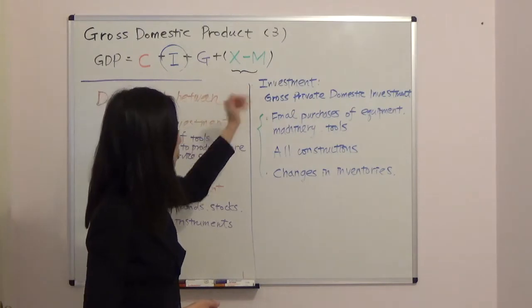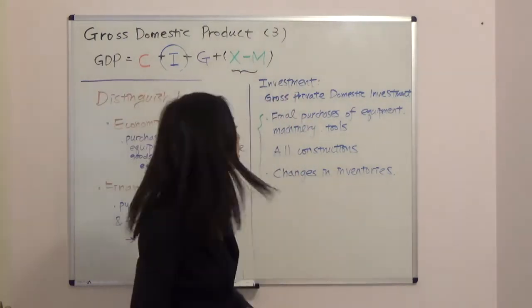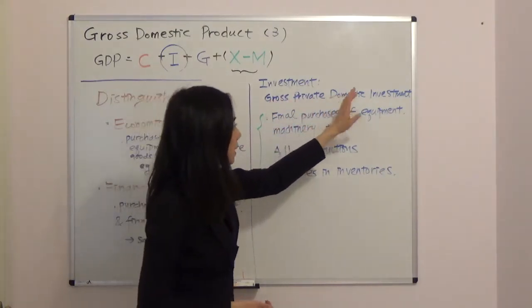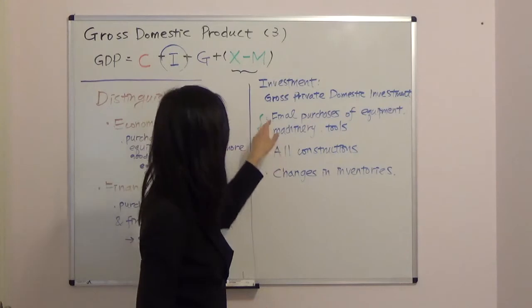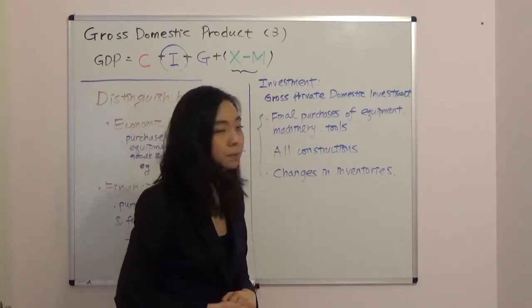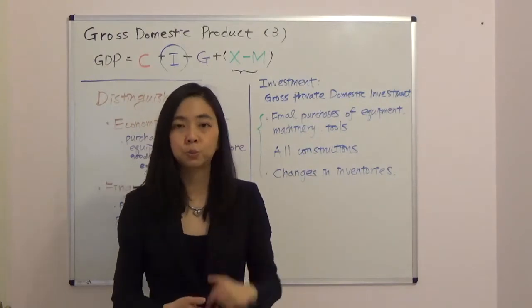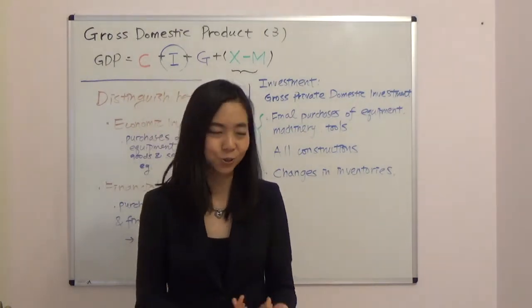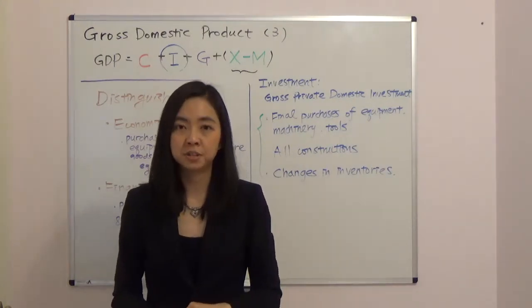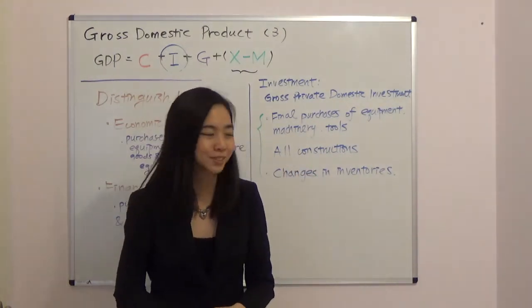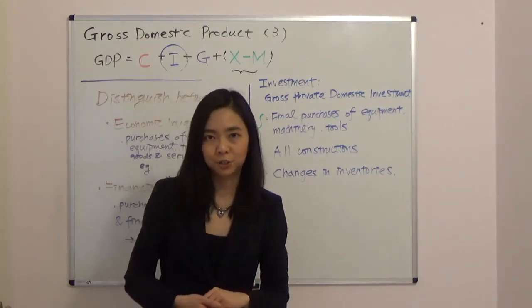So moving on to investment. The investment really is abbreviation of gross private domestic investment. And there are three components in them. The first one is final purchases of equipment, machineries and tools. So you purchase them in order to produce more goods and services in the future. And the second one is all constructions. So that includes construction of factories and also townhomes.